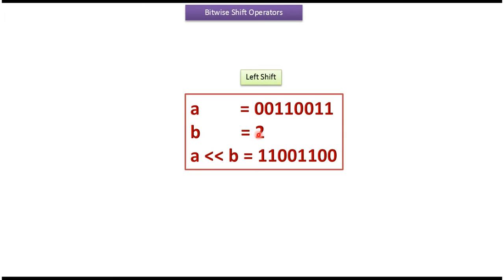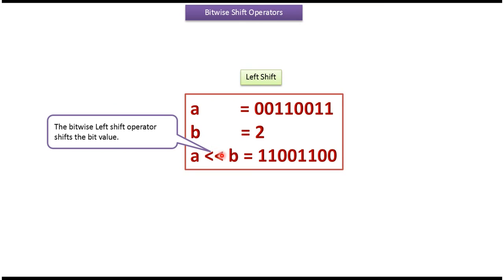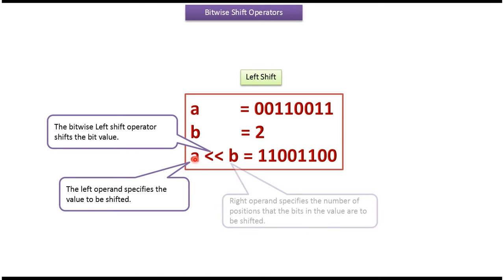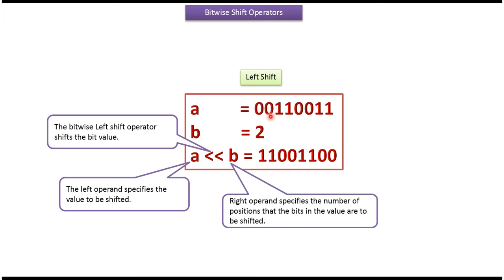Here we will see the left shift operator, which shifts the bit value. The left operand specifies the value to be shifted, and the right operand specifies the number of positions that the bits in the value are to be shifted. For A left shift B, where A is this value and B is 2, each bit in A will be moved to the left side by 2 positions. Here you can see the final output.